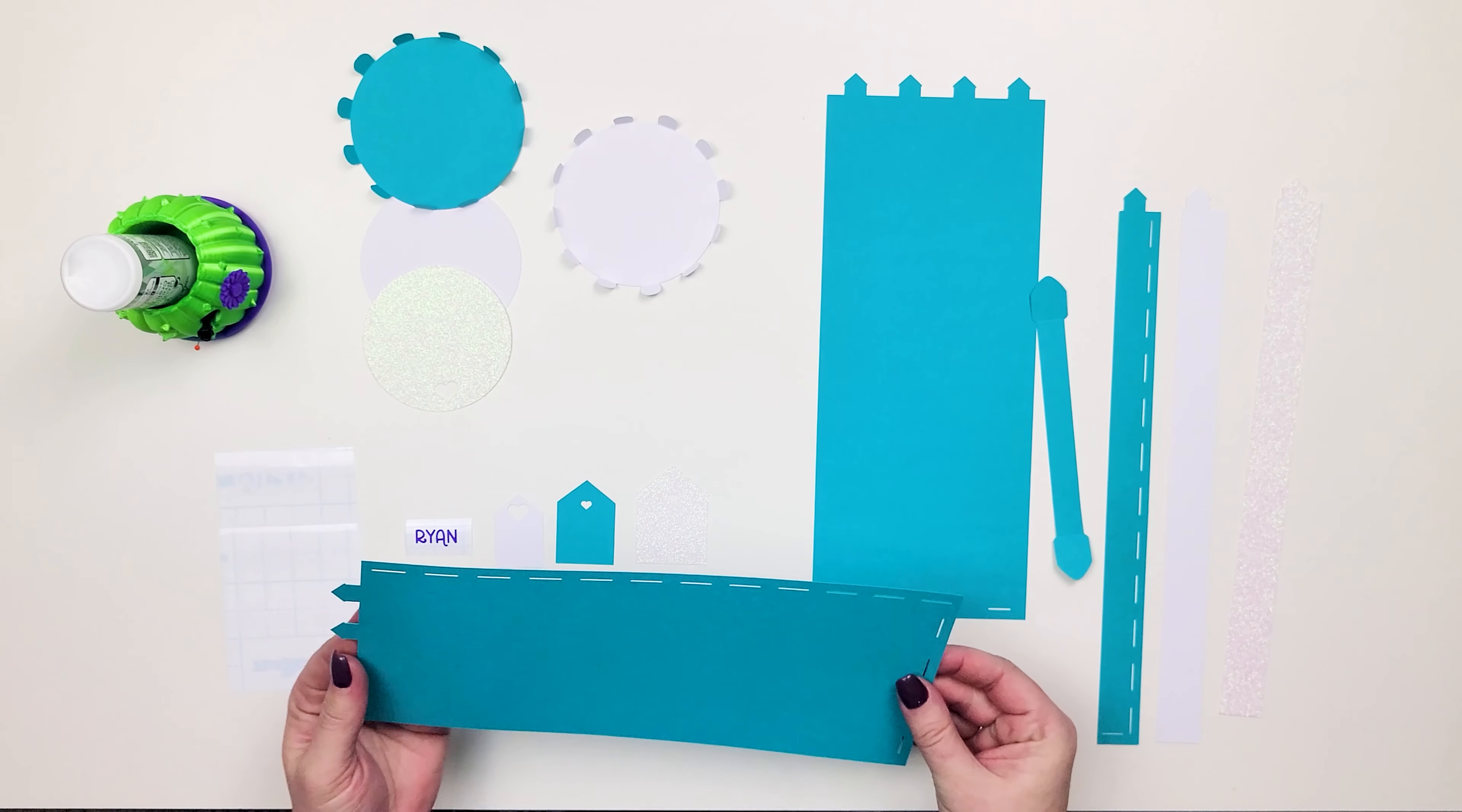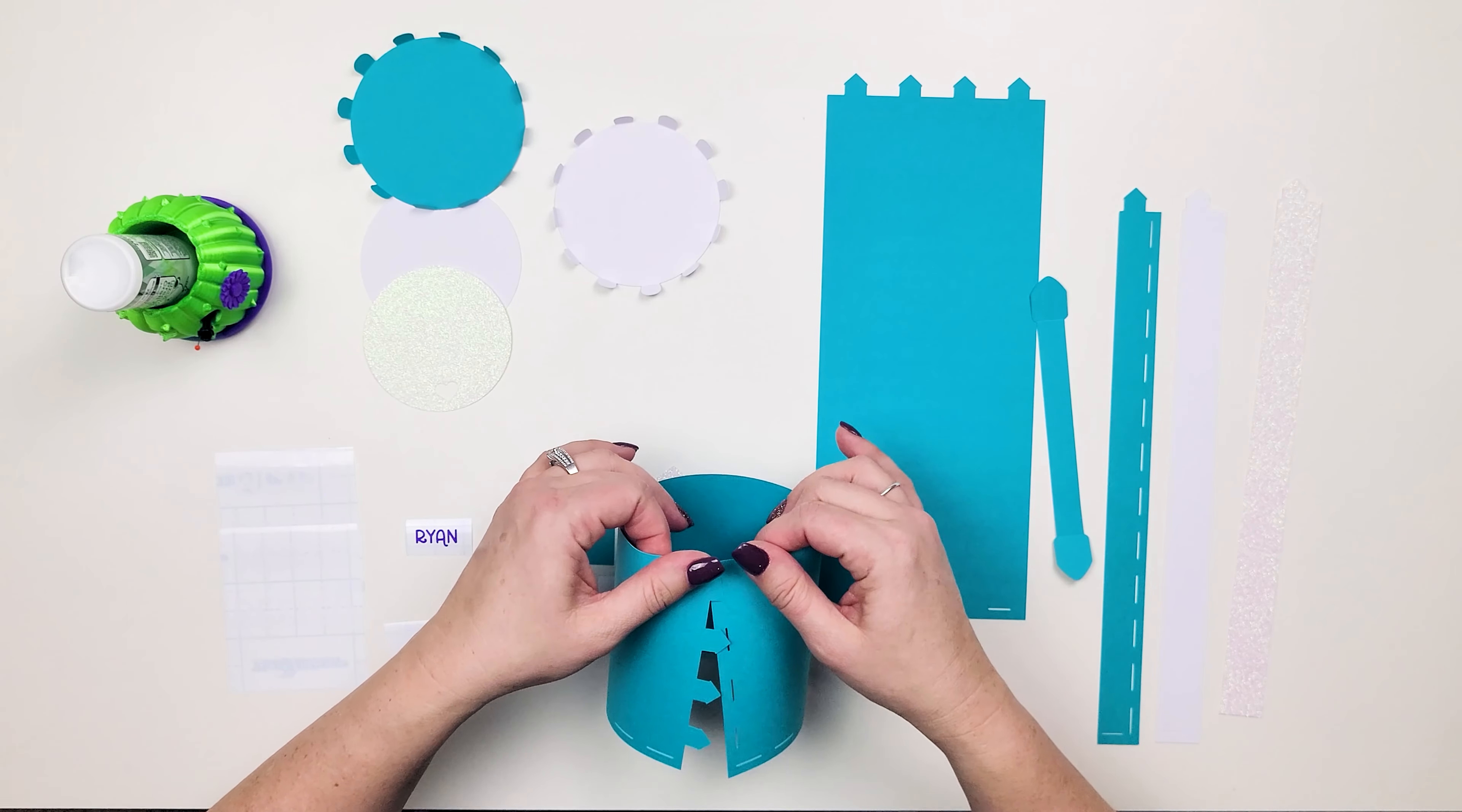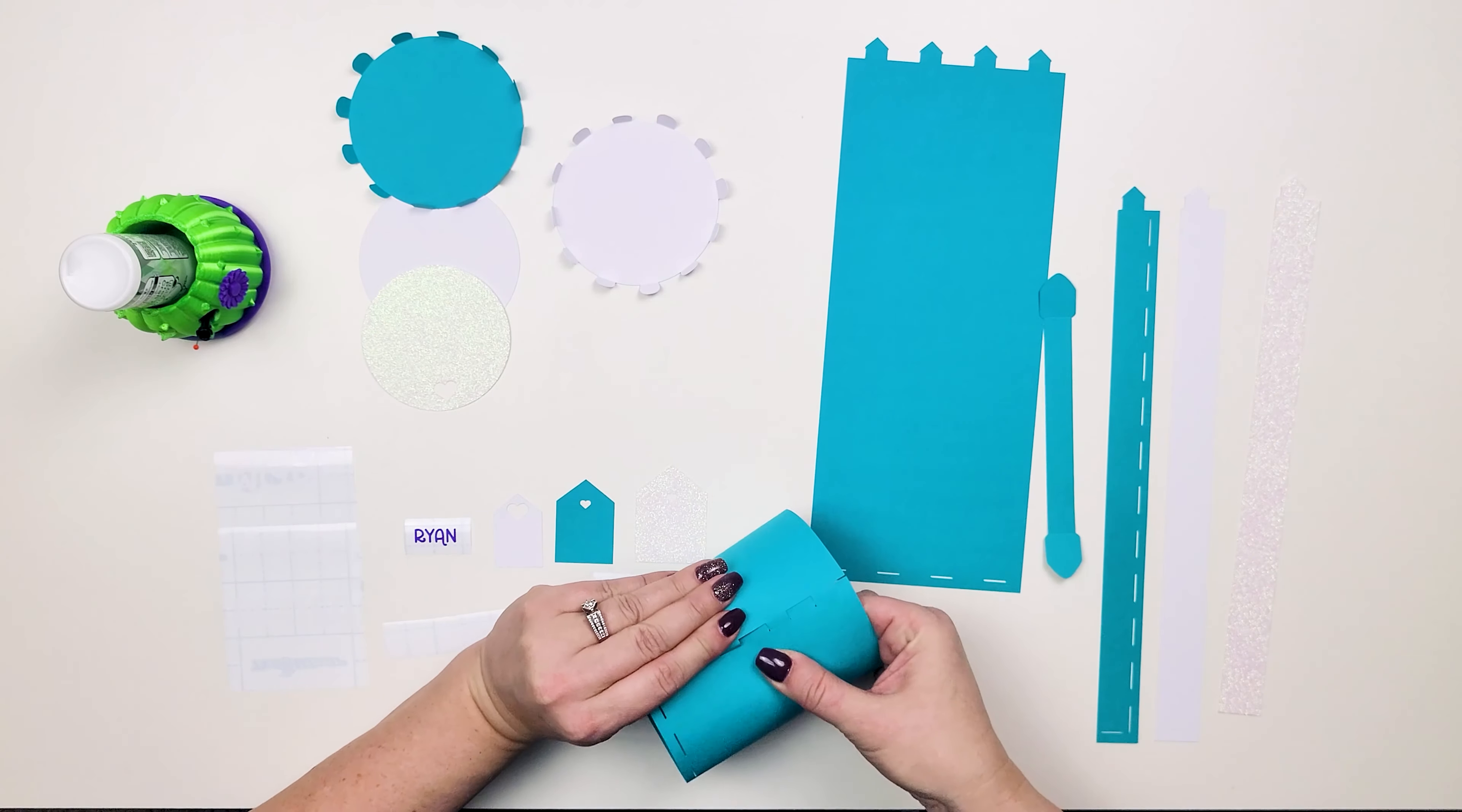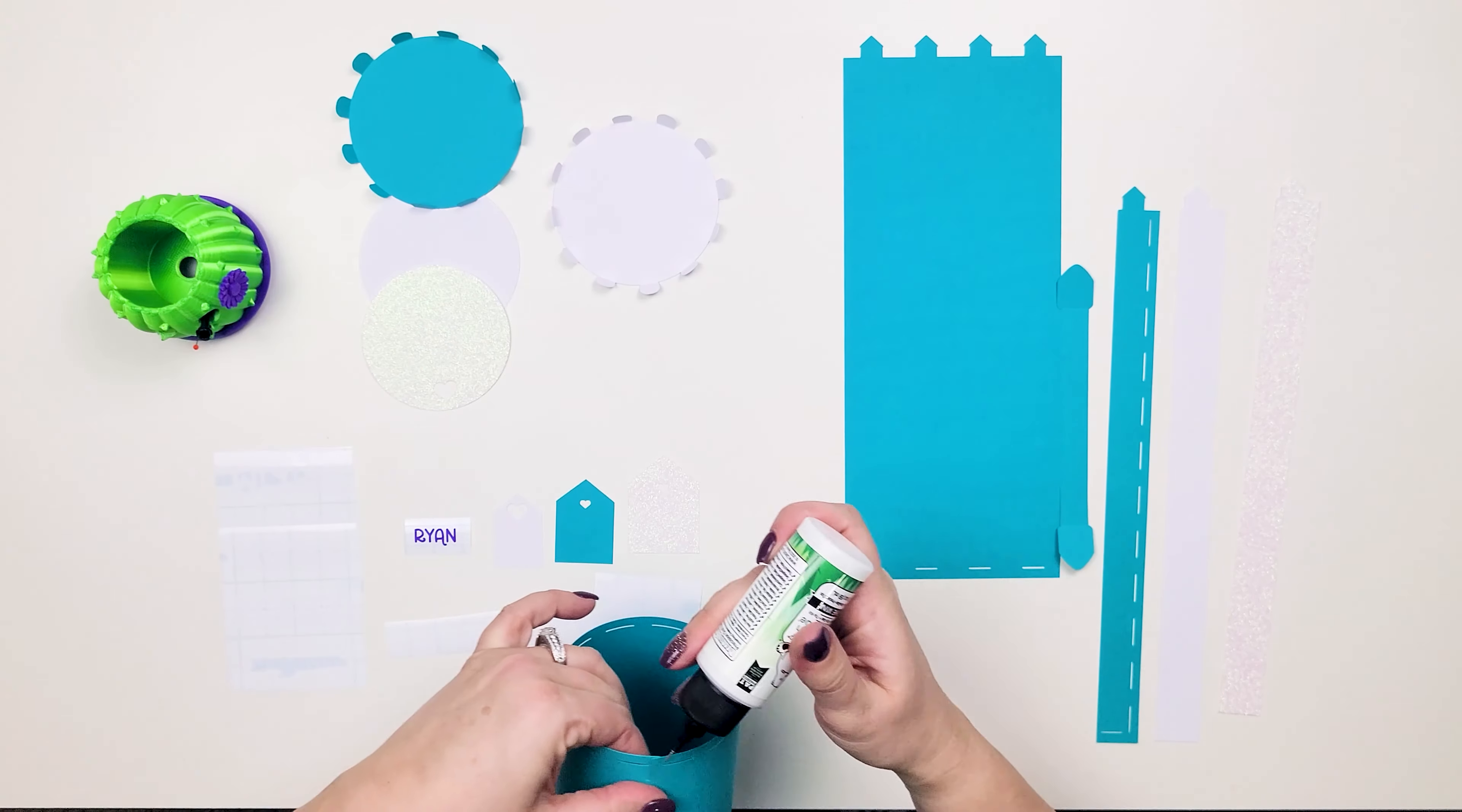For this first part of the video I'm going to put together the cup. I have folded the tabs on the top and bottom round pieces and now I am putting together that main piece of the cup with the tabs and a little bit of glue.